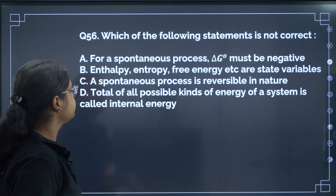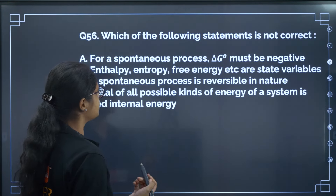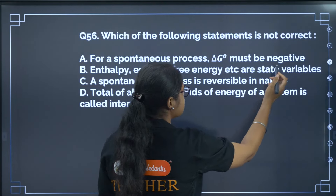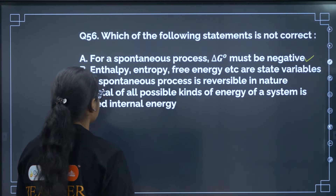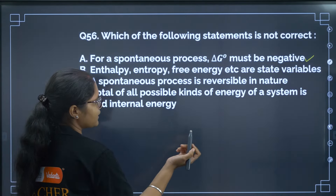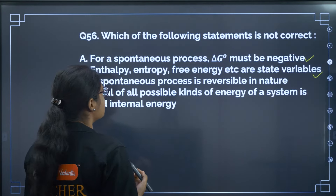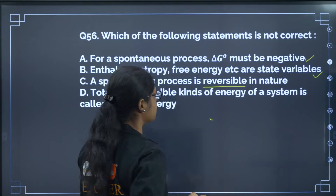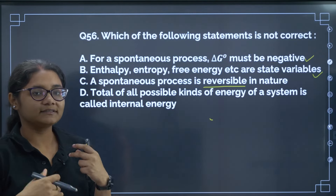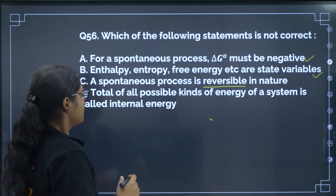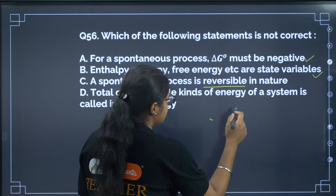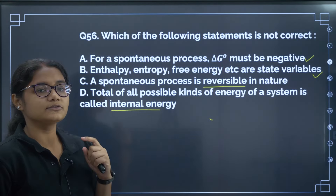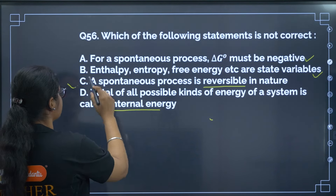Question 56: Which statement about thermodynamics is not correct? Statement A — for a spontaneous reaction ΔG must be negative — is correct. Statement B — enthalpy, entropy, and free energy are all state variables — is correct. Statement C — a spontaneous process is reversible in nature — is WRONG; a spontaneous process is irreversible. Statement D — total of all possible kinds of energy is internal energy — is correct. Incorrect statement is option C.